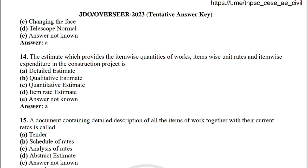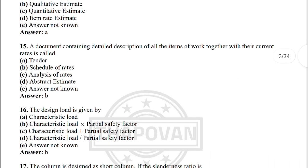Next: the estimate which provides the item-wise quantity of work, item-wise unit rates and item-wise expenditure in the construction project — the correct answer is option A: detailed estimate.